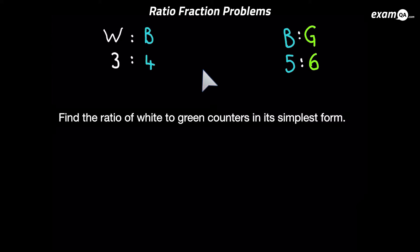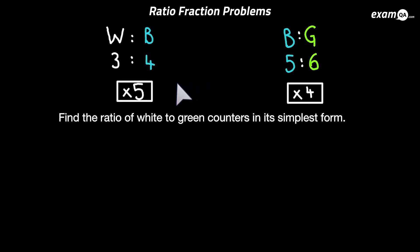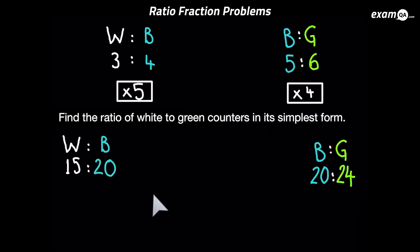In the white to blue ratio, blue is four. In the blue to green ratio, blue is five. We need to find a number they can both become — that number is 20. The left-hand ratio can be multiplied by five so the blue goes from four to 20, and the right-hand ratio multiplied by four so the five also turns to 20, making the blue the same value in both. So multiplying the left ratio by five and the right ratio by four, the blue becomes 20 in both ratios.